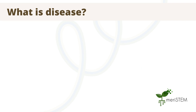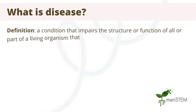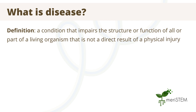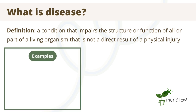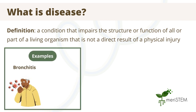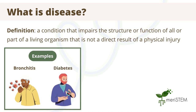So to start, what is a disease? A disease can be defined as a condition that impairs the structure or function of all or part of a living organism that is not a direct result of a physical injury. This could include something like bronchitis, which affects your ability to breathe due to inflammation of the airways, or diabetes, which affects insulin production in the body.